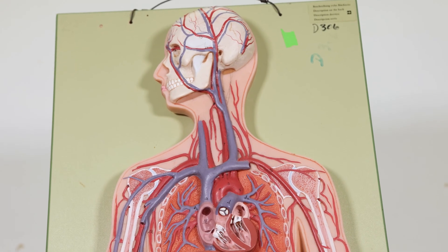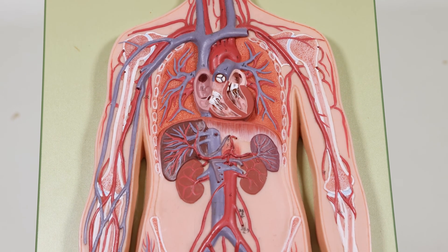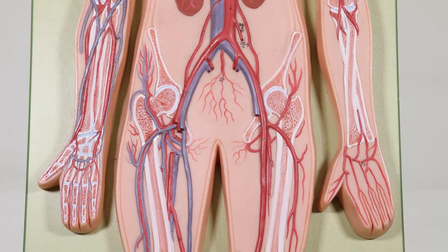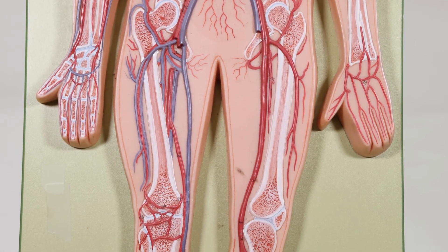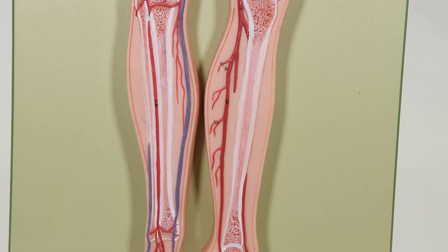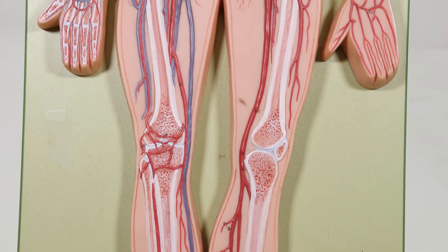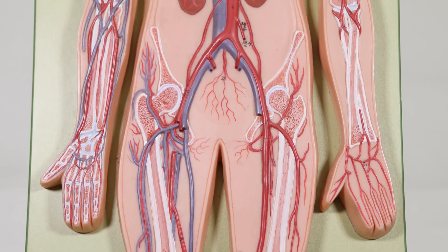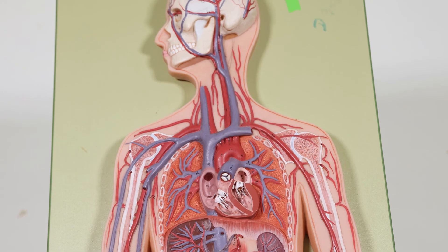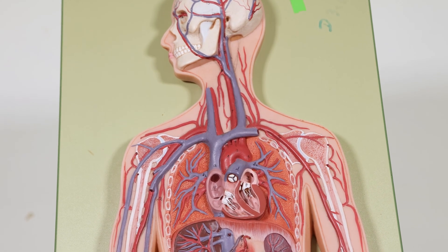This model is going to be looking at the different blood vessels throughout the entire human body. This is going to be a flat board representation, which means you're not getting a full three-dimensional view of the entire model. So you're looking at a flat board representation of this three-dimensional model. If we go back up to the top, back up to the head, we'll start up in this region.